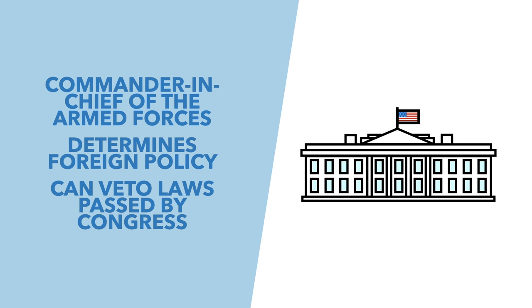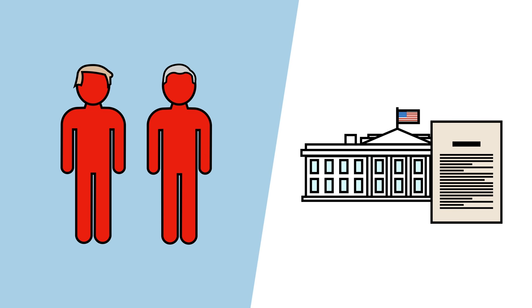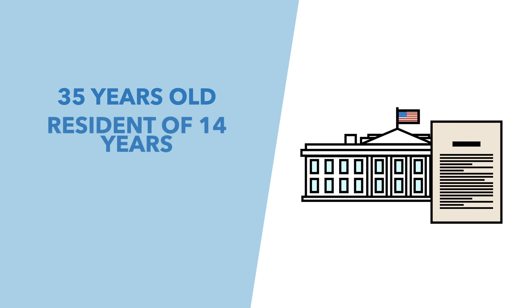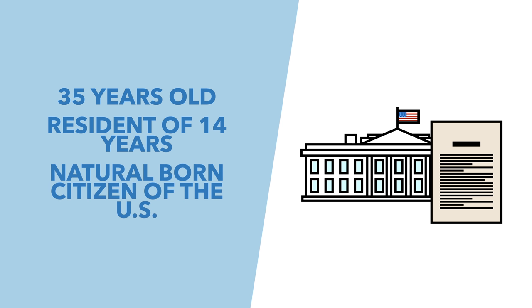As with Article 1 and Congress, Article 2 lays out the qualifications for president and vice president. They must be at least 35 years of age, they must have been a resident for 14 years, and a natural born citizen of the United States.